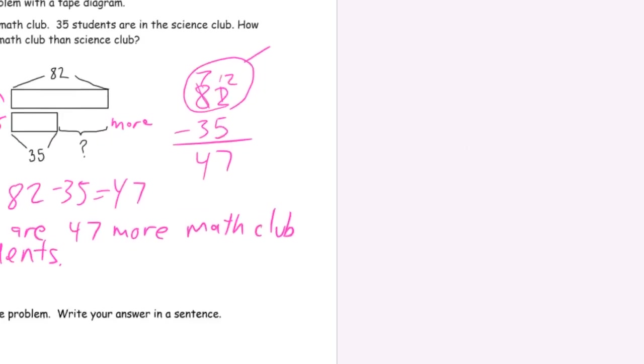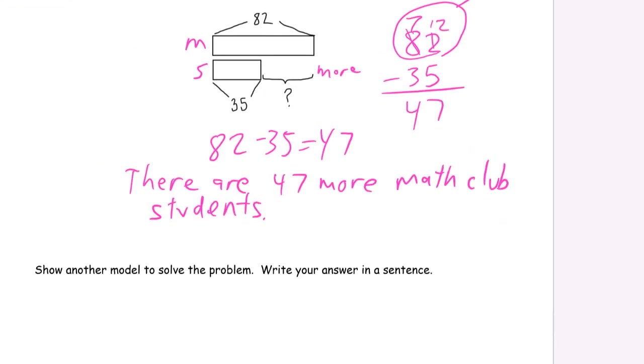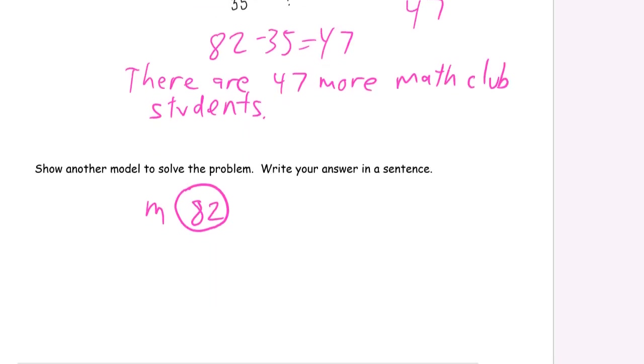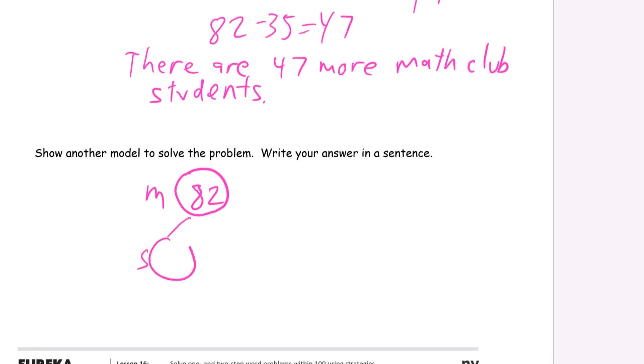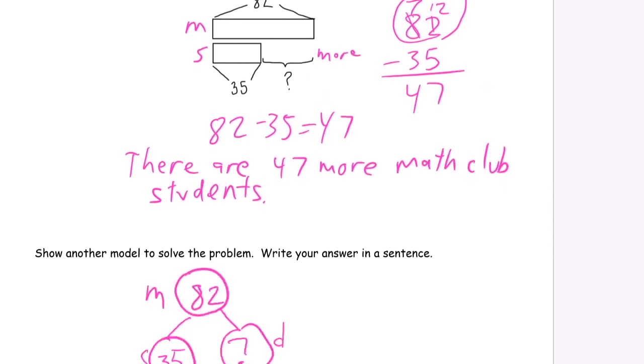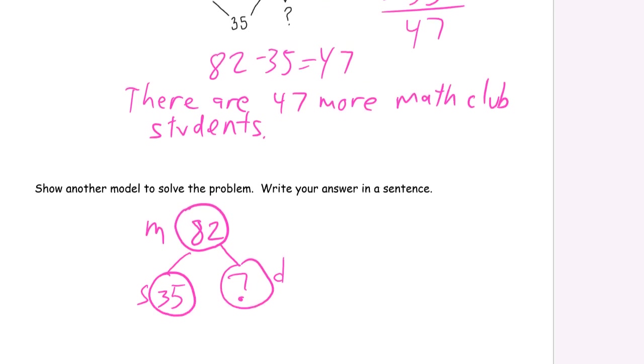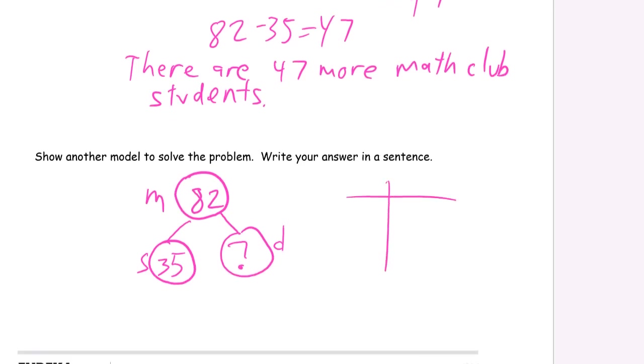Show another model to solve the problem and write your answer in a sentence. That was a tape diagram with vertical subtraction. We can also do this as a number bond, but we have to label the number bond if we're going to do it. The whole in our problem is that we have the math club with 82. We have the science club with 35 and the difference between the two, D. And I'll do this one with a tens and ones chart.